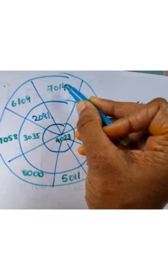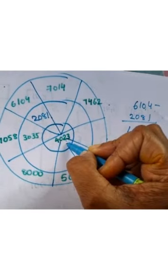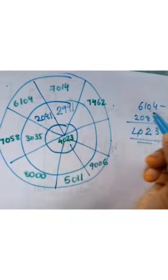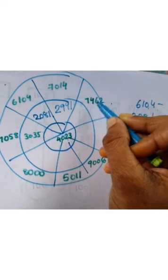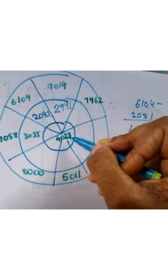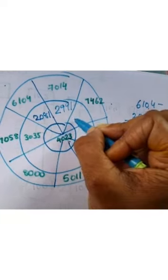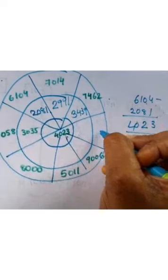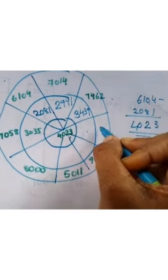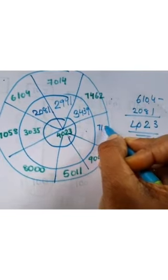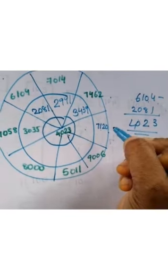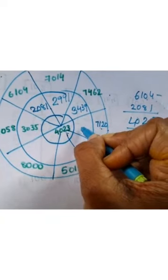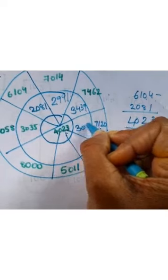Like this, 7714 minus 4023, we get 2991. Next, when we subtract 7462 with 4023, we get 3439. Here, two spaces are missing. I give 7120 here — we can give any number. When we subtract these two, we get 3097.